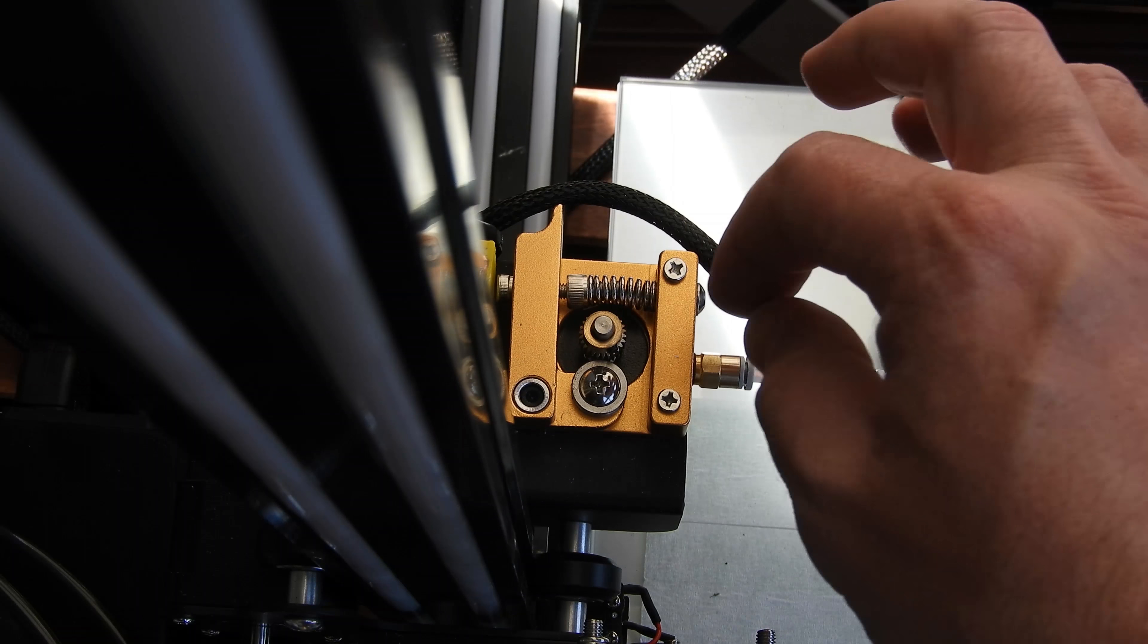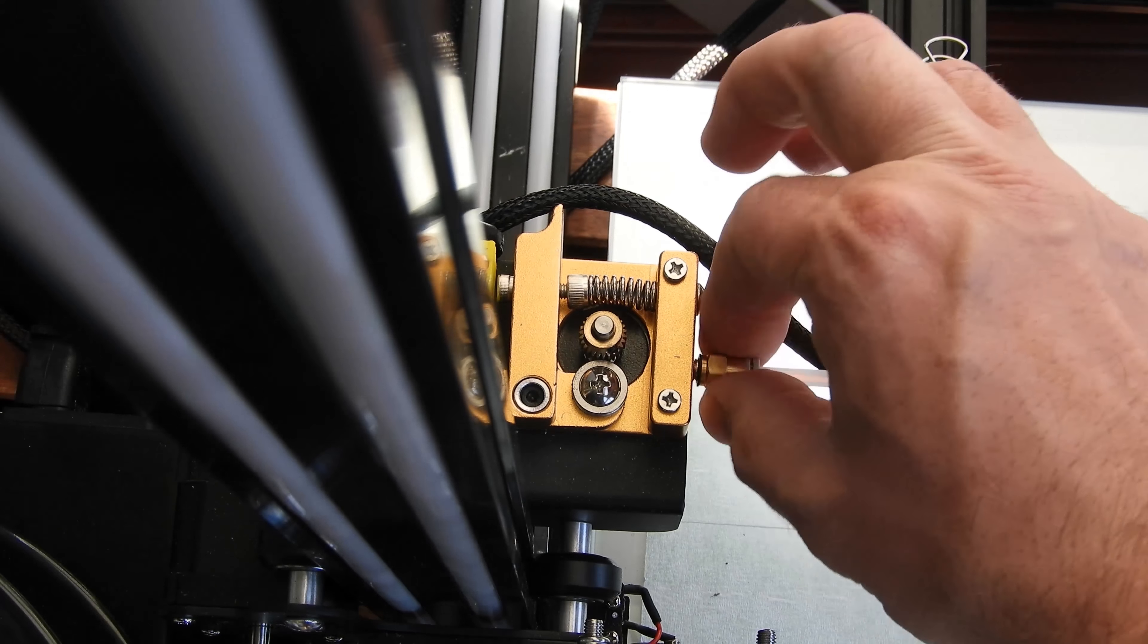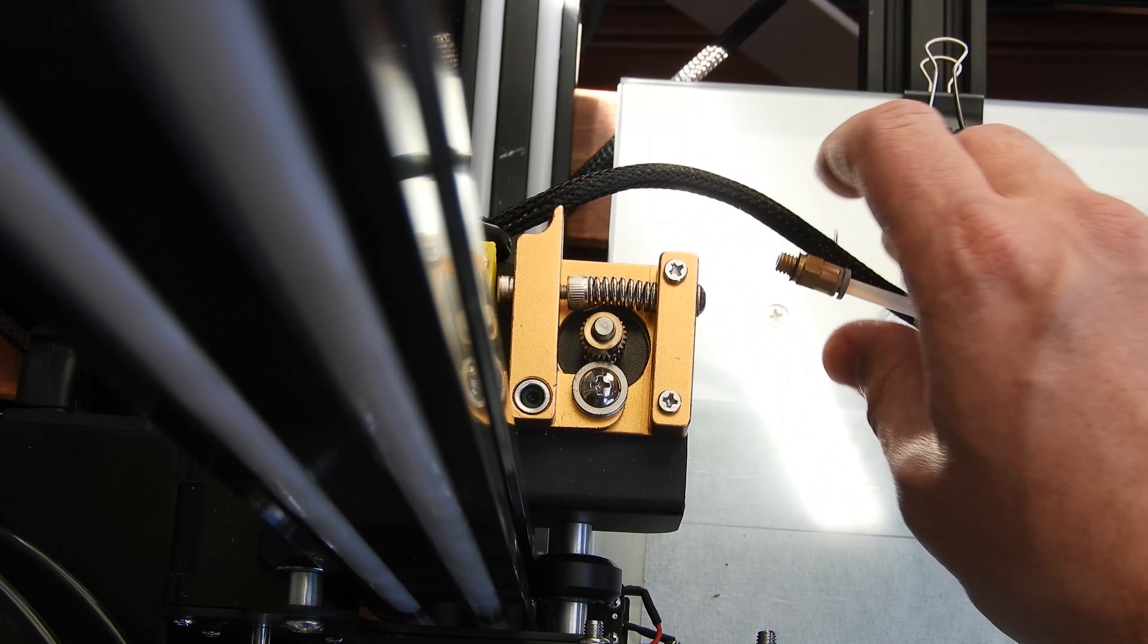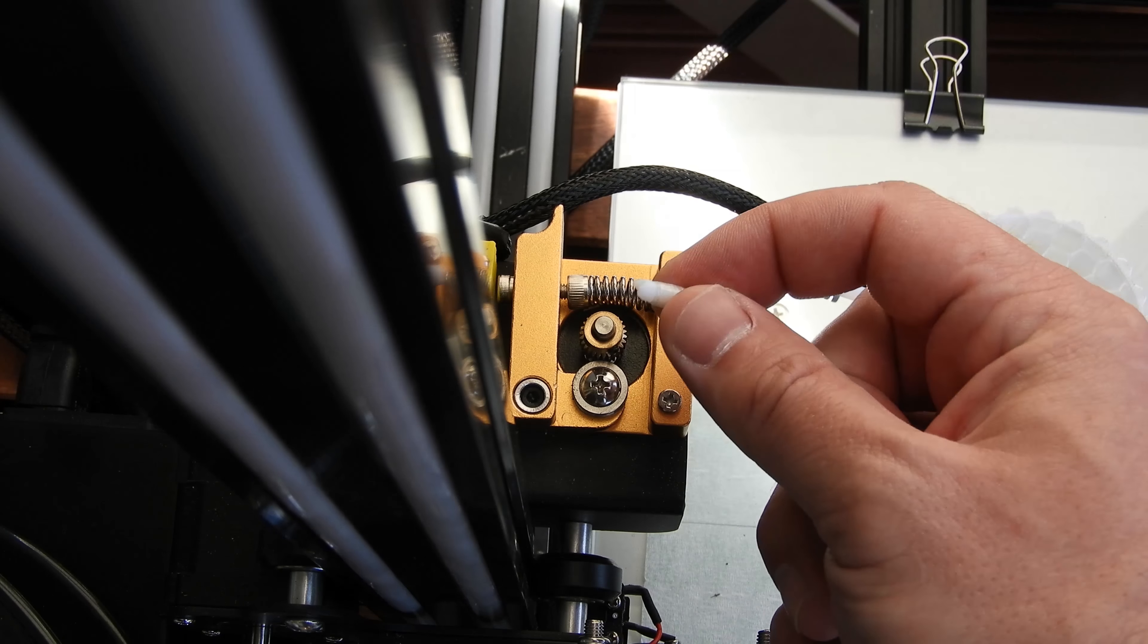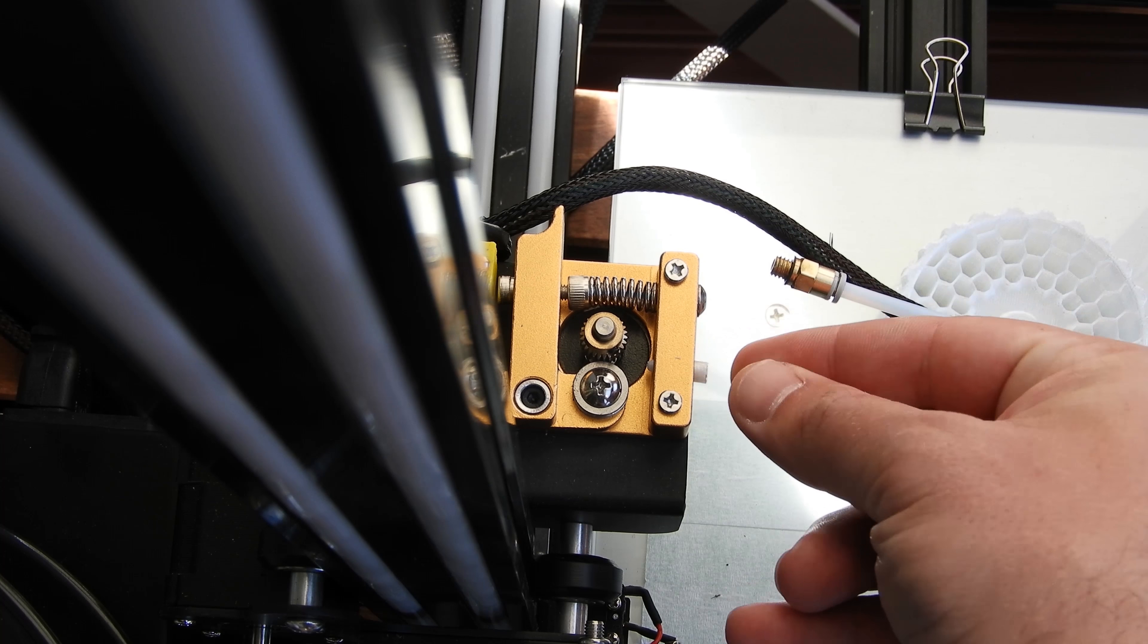Now we're almost done. Reconnect the Teflon tube from the extruder. We're going to use this part that we made. Just put it here.